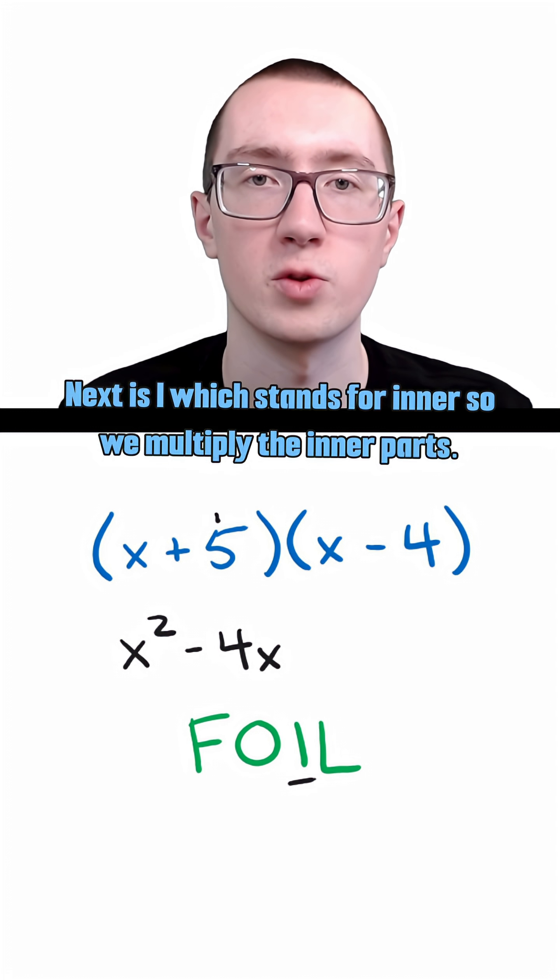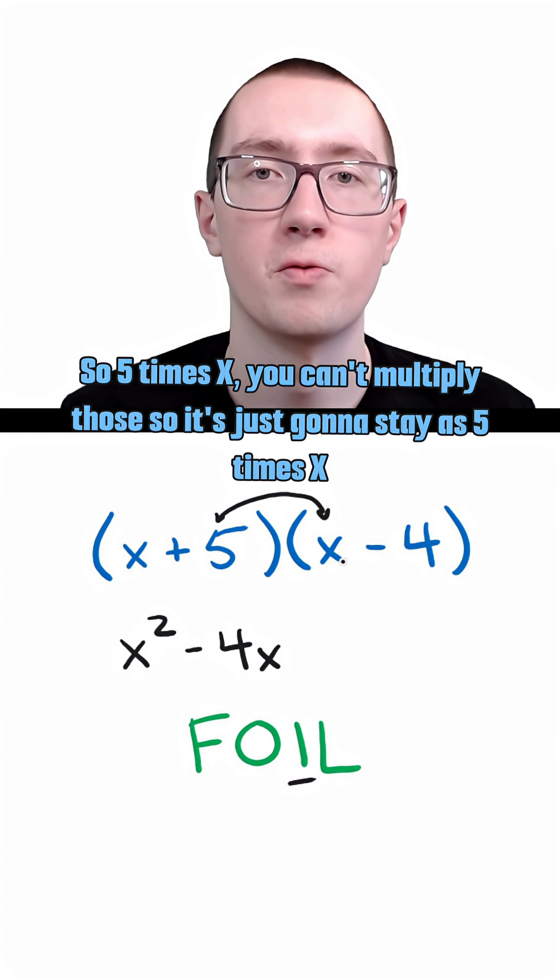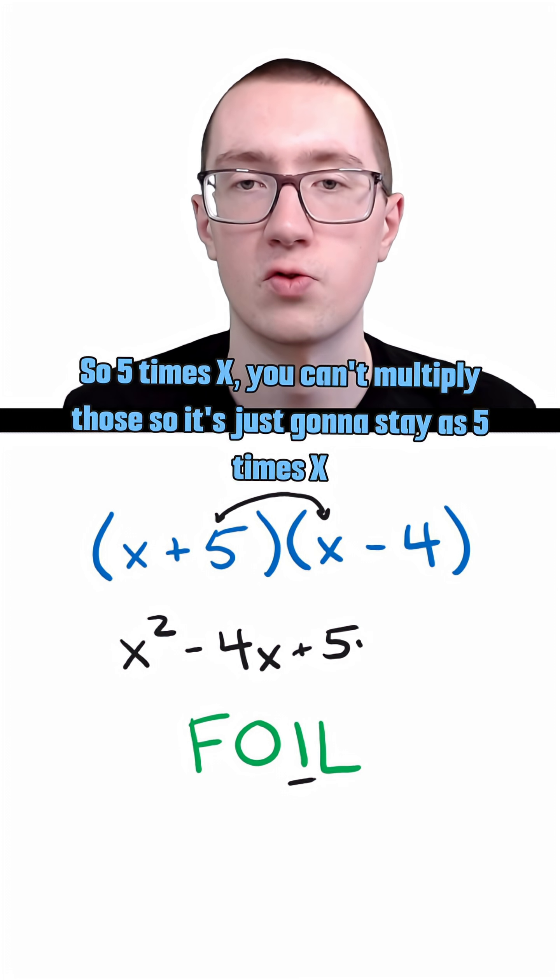Next is I, which stands for inner. So we multiply the inner parts. So five times x, you can't multiply those, so it's just going to stay as five x.